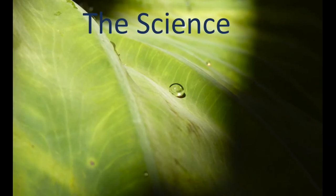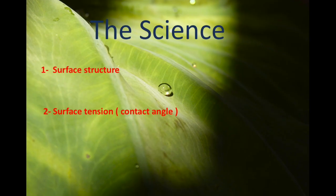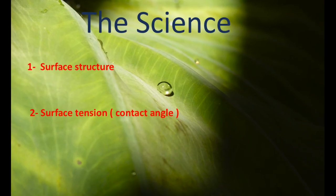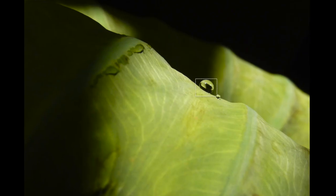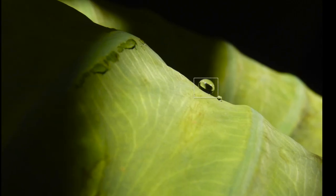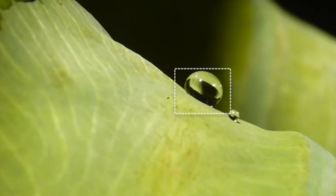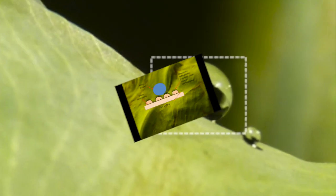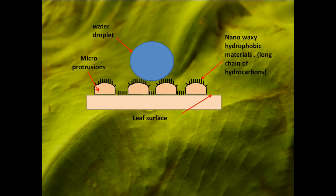So why does this happen? We can explain this by two concepts, which are the surface structure and the contact angle. If we take a closer look at the surface structure, it shows that it is not smooth at all as it seems. This is due to the presence of some micro-protrusions that are coated by nano-hydrophobic solid materials.